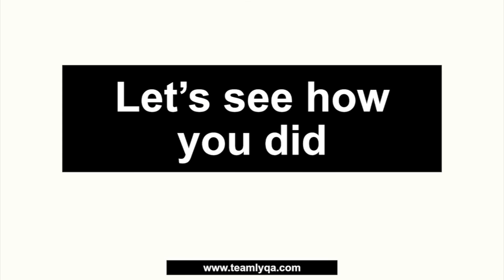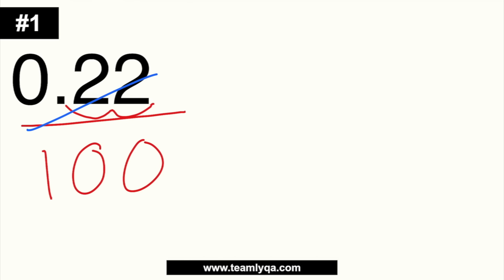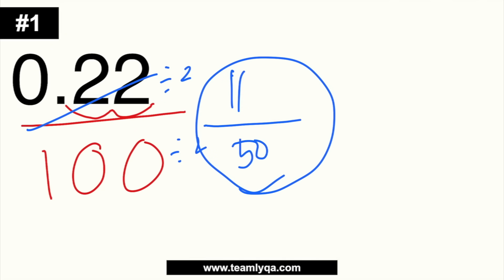Alright, let's see how you did. Number 1: 0.22. We turn 22 into the numerator. There are two decimal places, so we add two zeros — giving 22 over 100. Divide both by 2: 11 over 50. And since 11 and 50 share no common factor, that's our final answer: 11 over 50. Hopefully you got that one right!